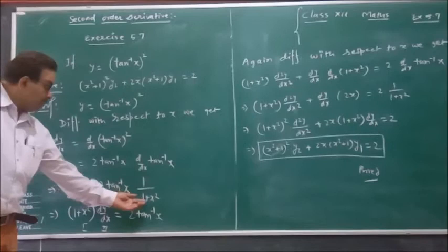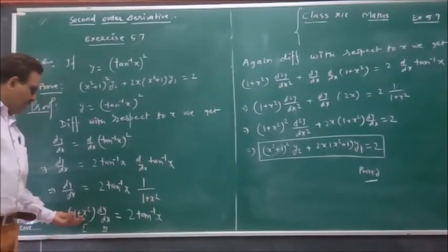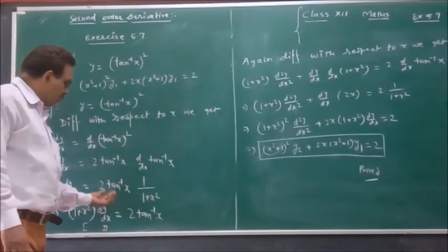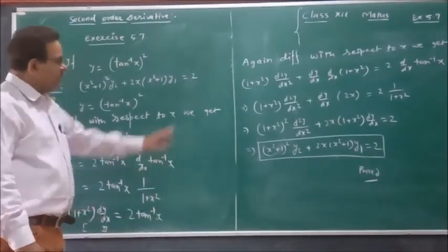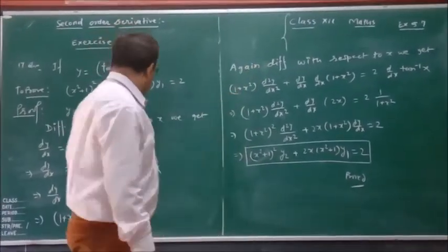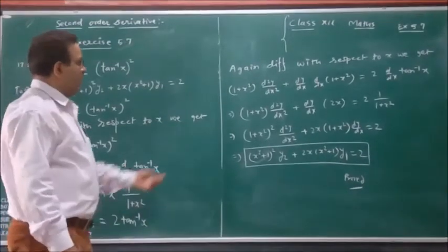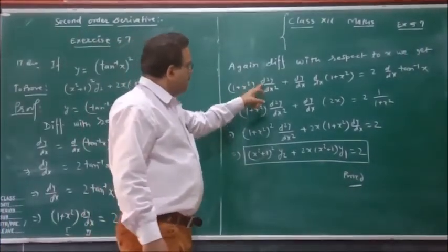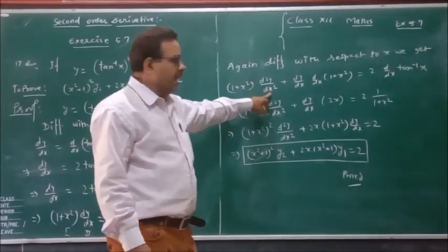Now multiplying both sides by 1 plus x squared, we get 1 plus x squared times dy divided by dx equal to 2 tan inverse x. Again differentiating this with respect to x, we get first function times second function plus after differentiating the first function and second function, giving d squared y divided by dx squared.